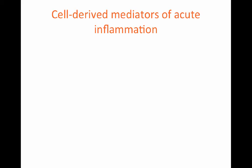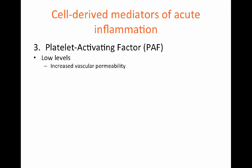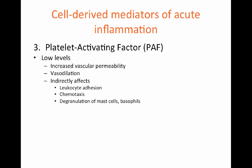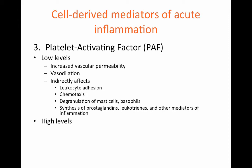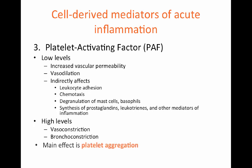A third cell-derived mediator of acute inflammation is platelet-activating factor, or PAF. Low levels of PAF can cause increased vascular permeability, vasodilation, and indirectly affect leukocyte adhesion, chemotaxis, degranulation of mast cells and basophils, and the synthesis of prostaglandins, leukotrienes, and other mediators of inflammation. On the other hand, high levels of PAF can cause vasoconstriction and bronchoconstriction. Finally, the main effect of PAF is to cause platelet aggregation.